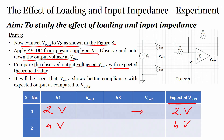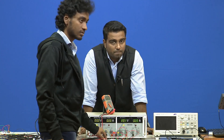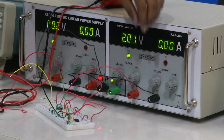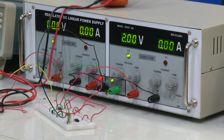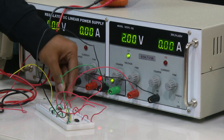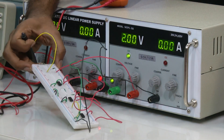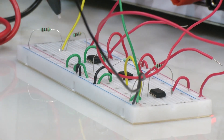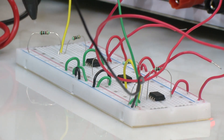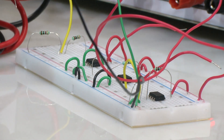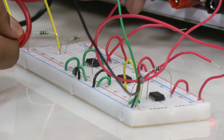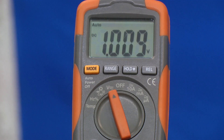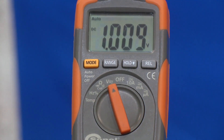Let us focus on the breadboard. Suman is applying 2 volts across the potential divider circuit, as you can see on the DC power supply. The yellow wire carries the output voltage across resistor R2. The measured voltage across R2 is approximately 1.009 volts, and this voltage is being applied to the non-inverting amplifier.